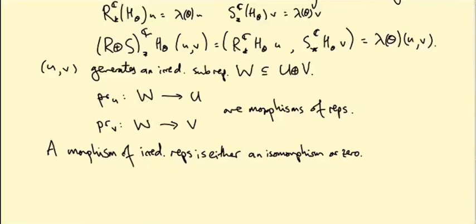If the kernel is everything and the map is zero, if the kernel is zero, then the map is injective and the image of the morphism will be a subrepresentation of U or V. And again, because U and V are irreducible, that's going to be either everything or zero. If the image is everything, then it's surjective. If the image is zero, then it's zero. So the only possibility is that you have an isomorphism or the zero map.